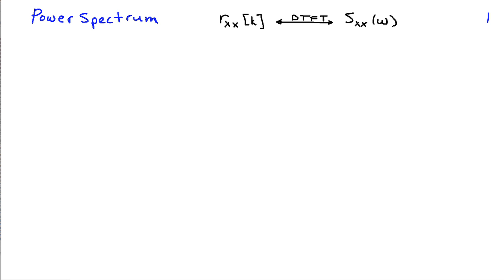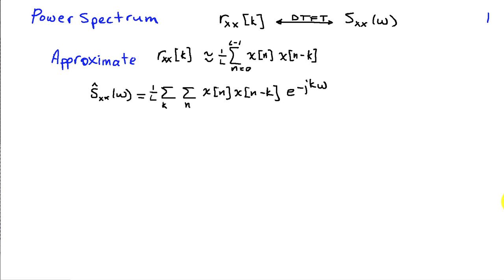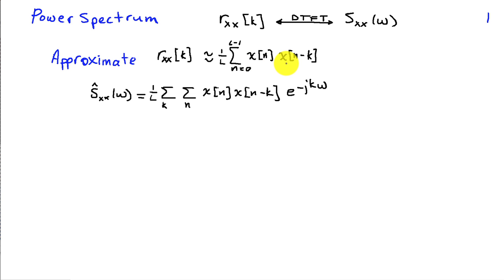Recall that the power spectrum is the discrete time Fourier transform of the correlation sequence. So if we look at how to estimate a power spectrum from samples, we can begin by approximating the correlation sequence from a set of L samples of x of n as the average of the product of x of n times x of n minus k. Because the correlation is defined as the expected value of x of n times x of n minus k, so we approximate the expectation by an average over the available samples.